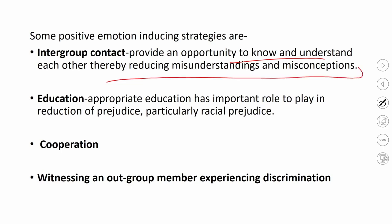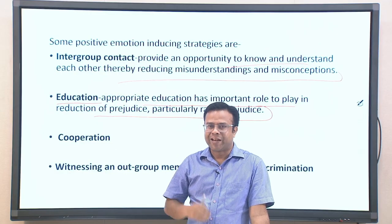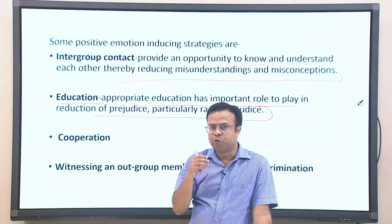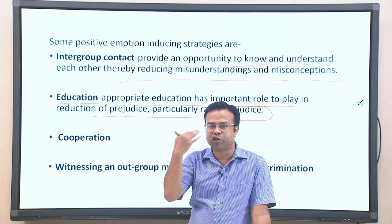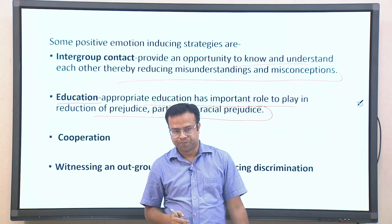The best way to reduce prejudice and increase positive emotion is to know more. If you know more, people will realize that many stereotypes and generalized beliefs may not be right, because people within a group can be very different. Connected to this, education plays a very important role — appropriate education can significantly reduce prejudice, particularly racial prejudices. Historically, as education increased and people understood more about the negative impact of racial prejudice, those prejudices slowly decreased.